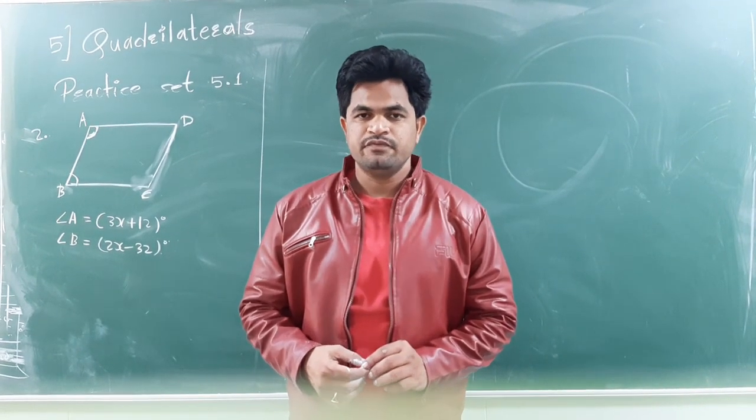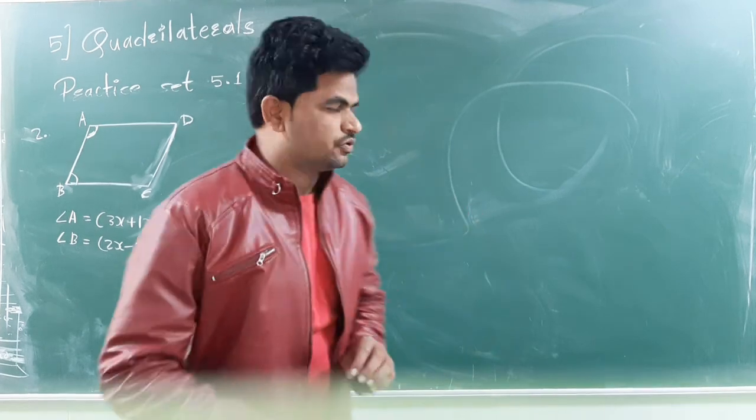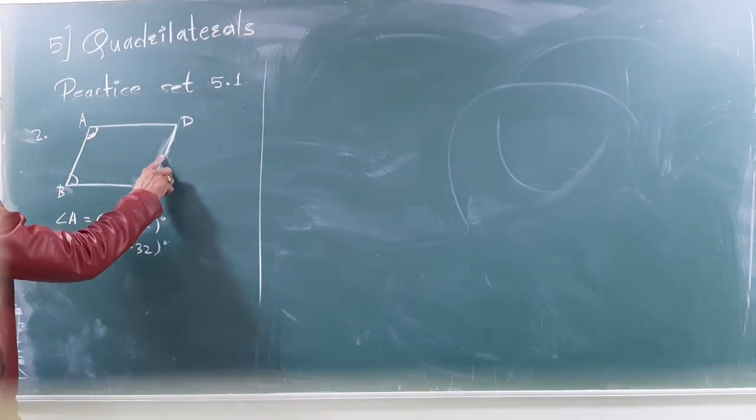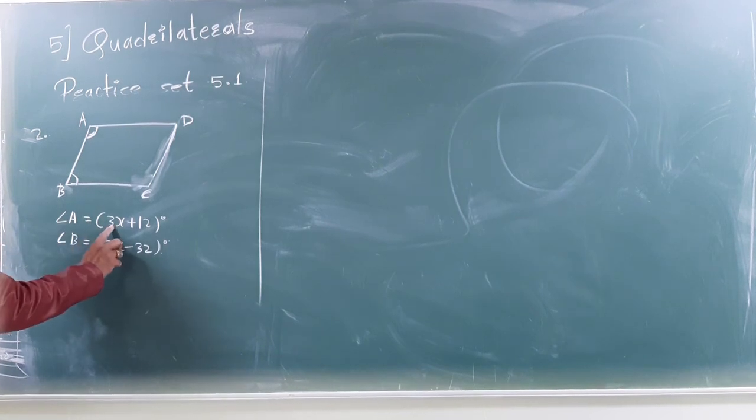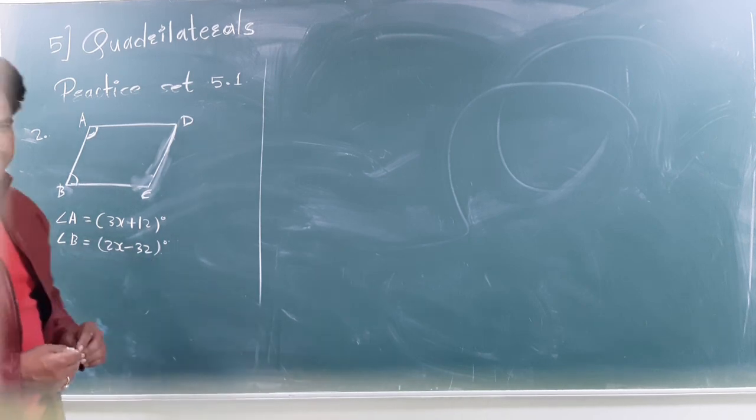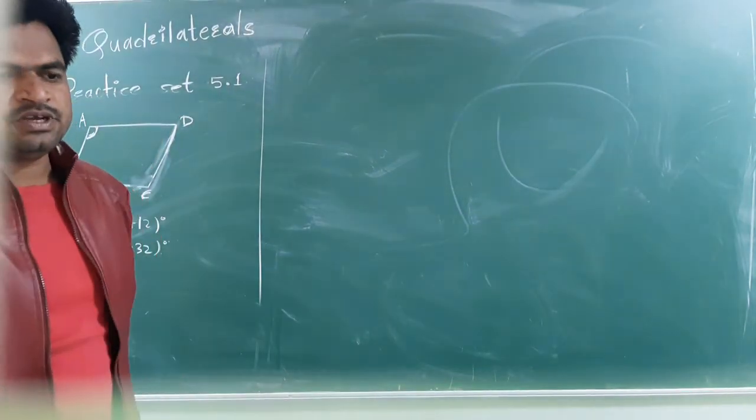Practice set 5.1, problem number second. Now, look at here, we have given, this is the parallelogram again. And, angle A is given in 3X plus 12 degree. And, angle B is given 2X minus 32 degree. Then, find value of X here. So, what is the measure of X?